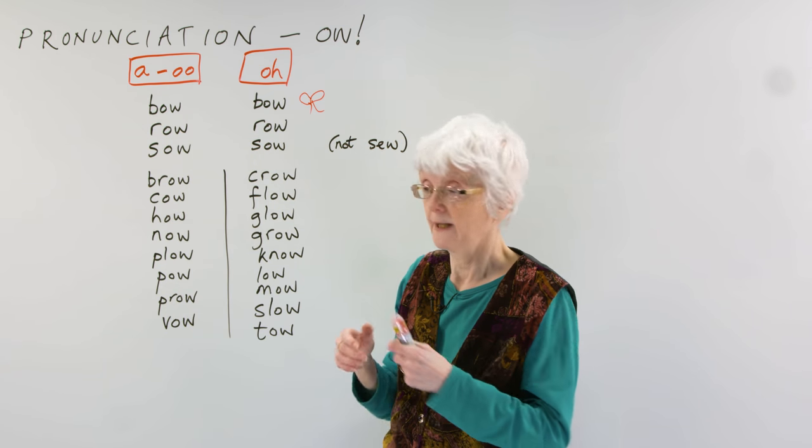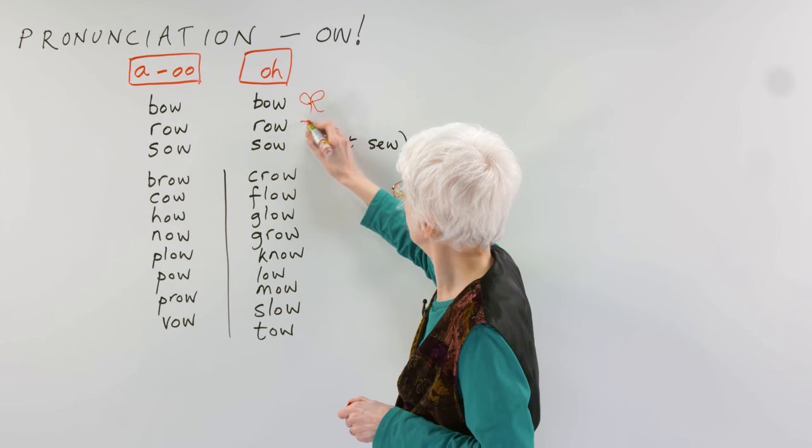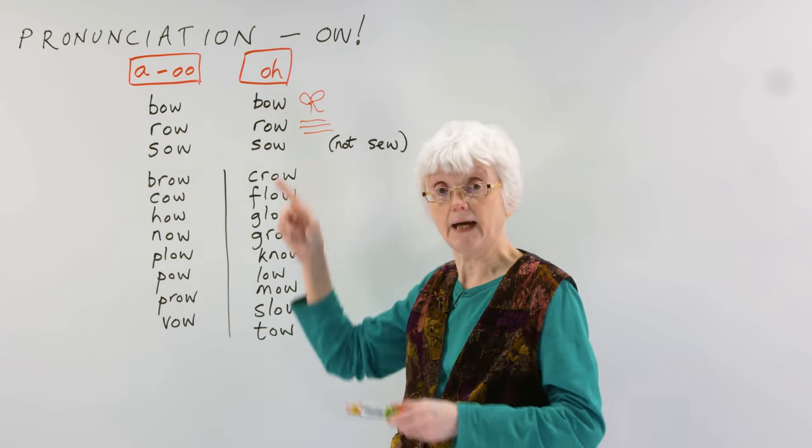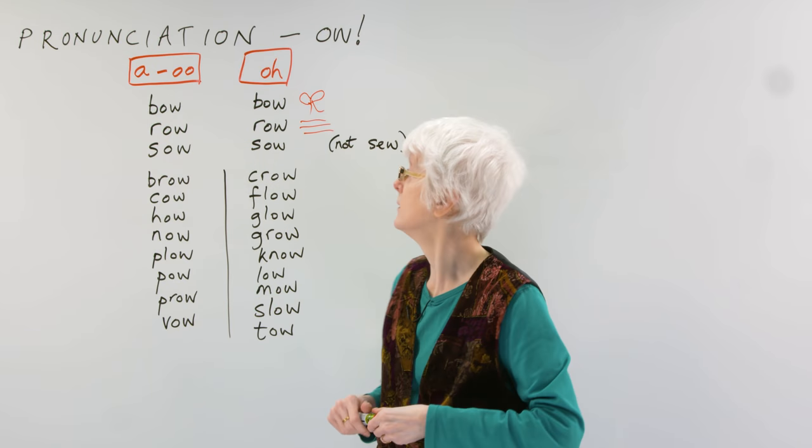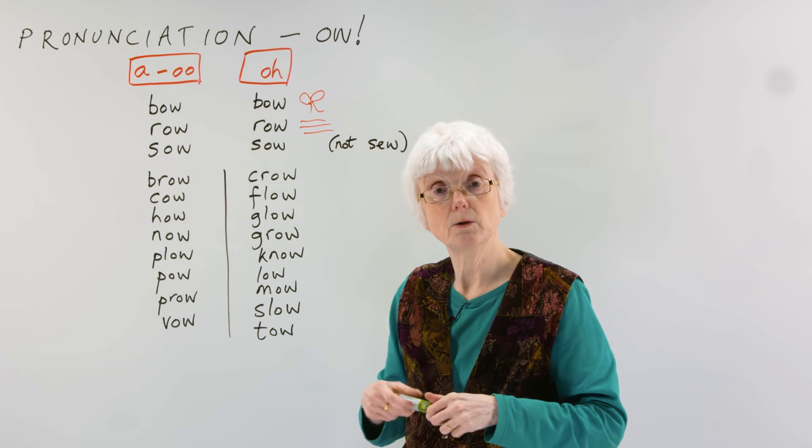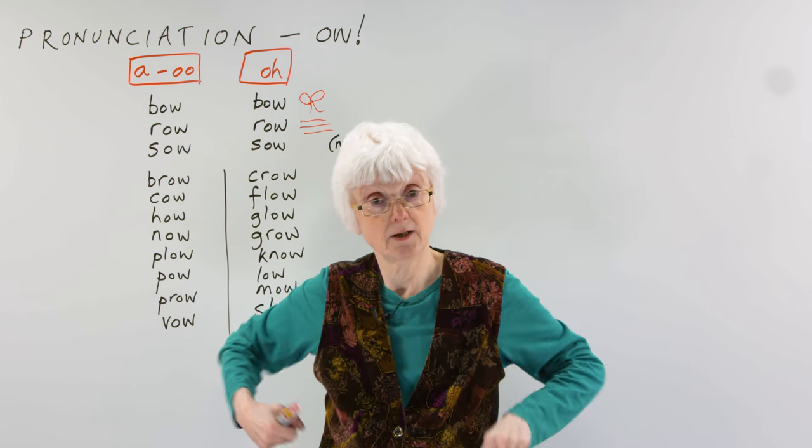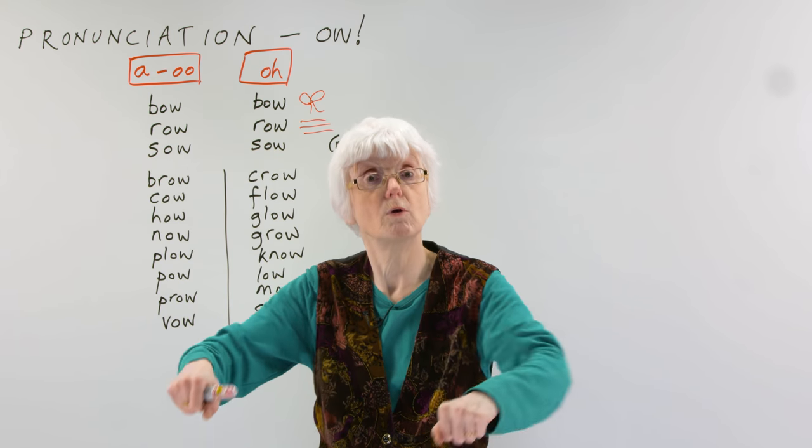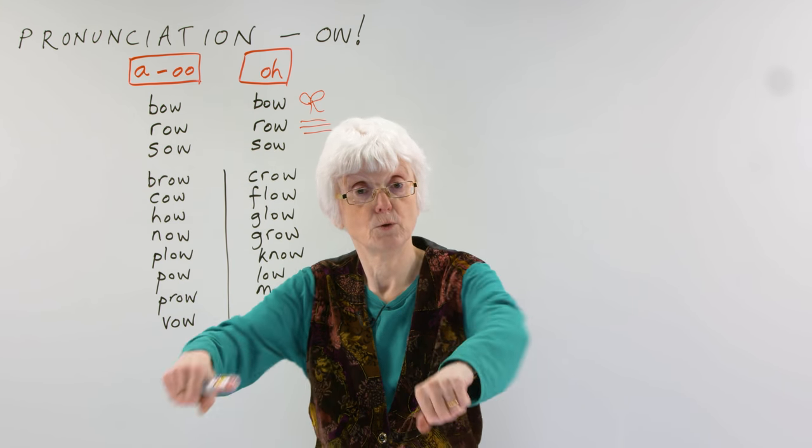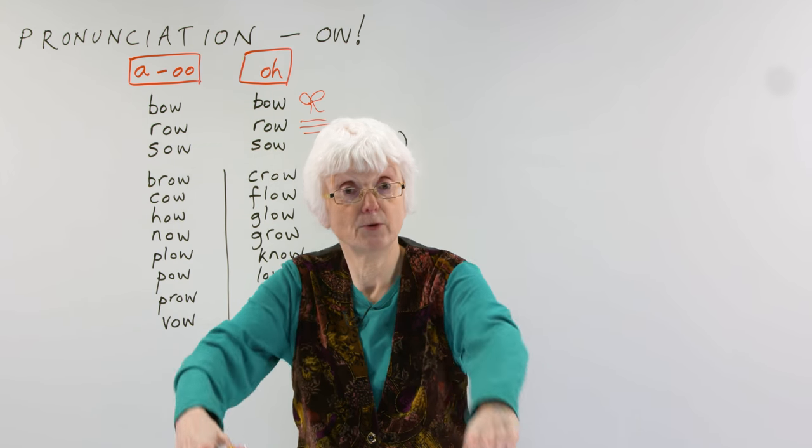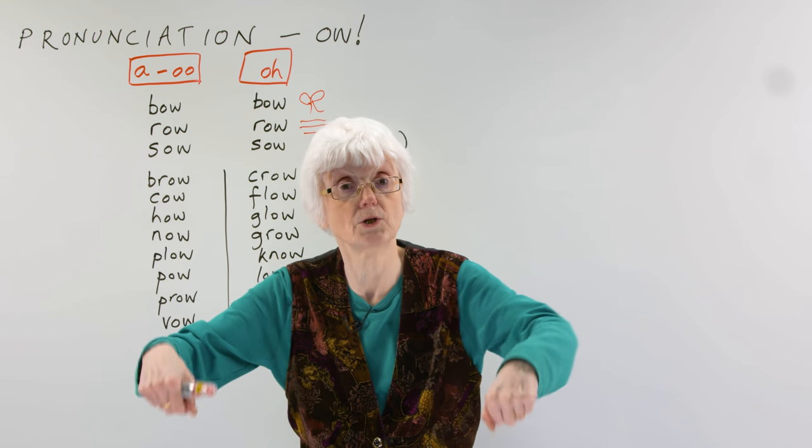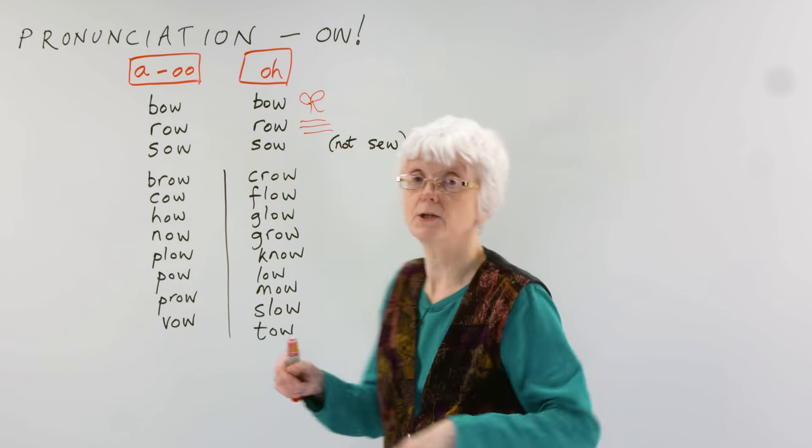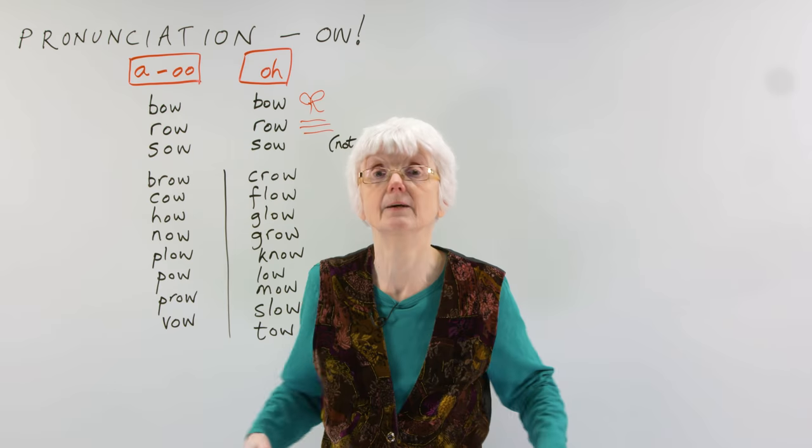But row is either when things are in lines like that. That's a line or a row. Or you can also, if you're in a boat with oars like this, you row. You row the boat. You're doing this with the wooden oars to get through the water, to move through the water. That's also to row the boat. And it's a rowing boat.